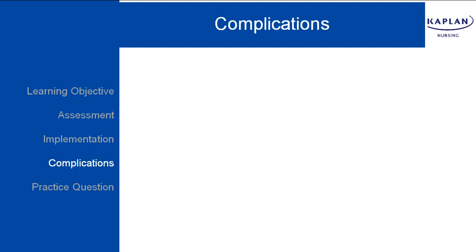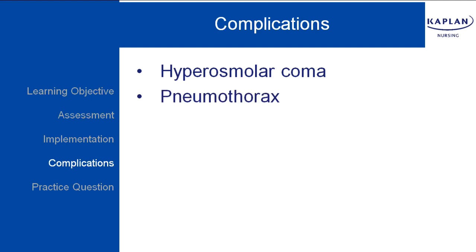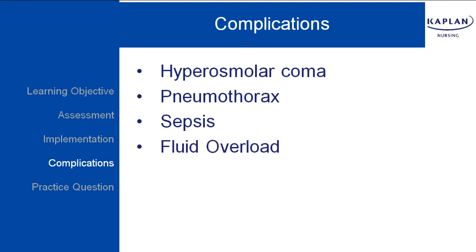In addition to monitoring lab values, it is important for the nurse to monitor the client for complications. These include hyperosmolar coma, pneumothorax — remember parenteral nutrition should not be started until the chest x-ray validates placement — sepsis, fluid volume overload, and air embolism.